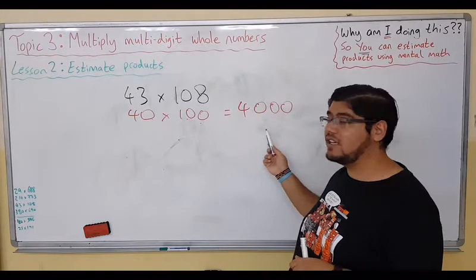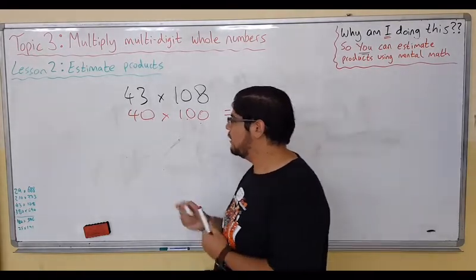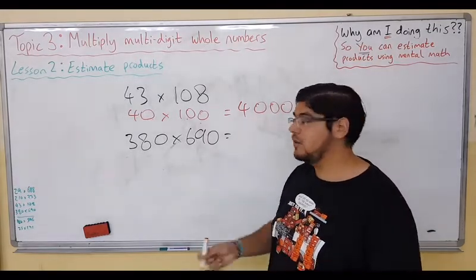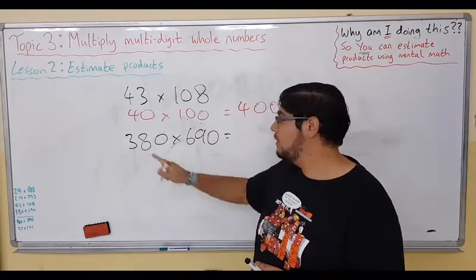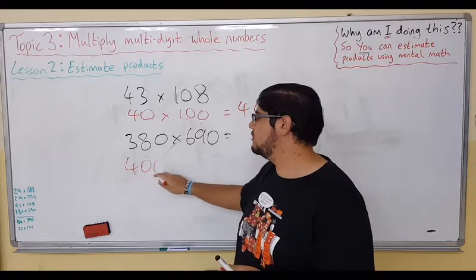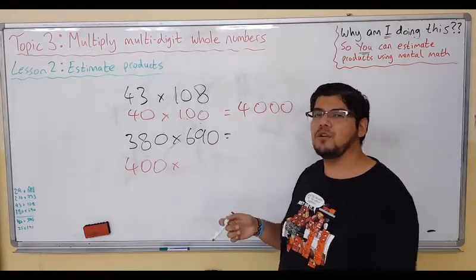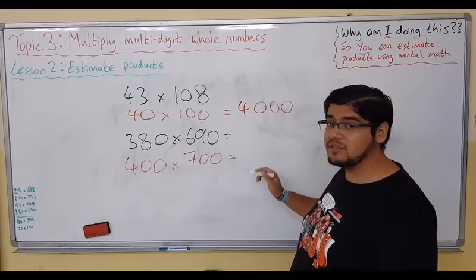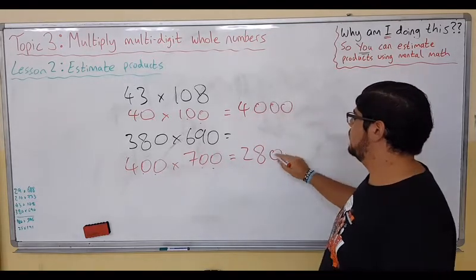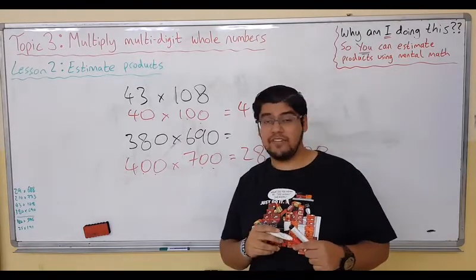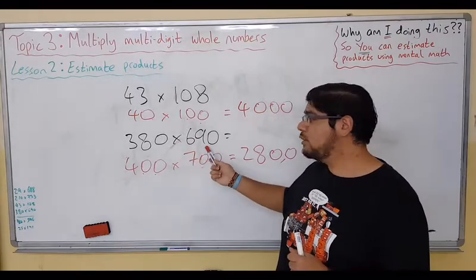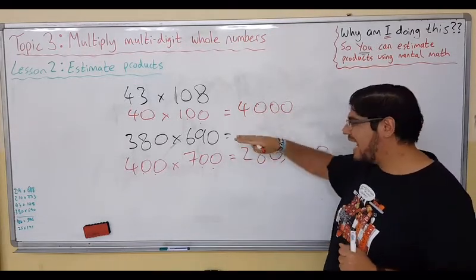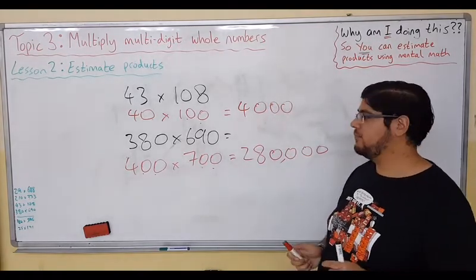Our next one: 318 multiplied by 619. 318, what is it close to? 400, so we'll take it up. 619, so close to 700. Now do we have compatible numbers? Yes, 4 times 7 in our times tables. 4 times 7 is 28. Add your zeros: one, two, three, four. Finally, is it an over or under? We took both numbers and we went up, so that means our estimate is higher. It's an over estimate, so the actual answer will be a little bit less.